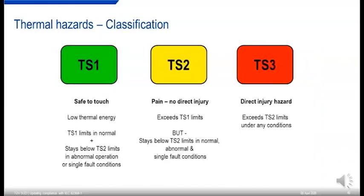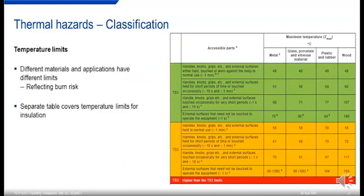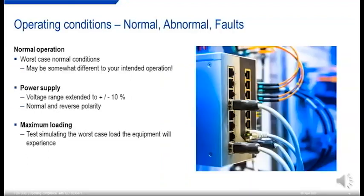For thermal hazards, TAS1, 2, and 3. TAS1 is safe to touch, staying below the limits in normal conditions and below TAS2 limits in abnormal and single fault conditions — slightly different to the preceding classifications. TAS2 might cause pain but no direct injury, staying below TAS2 limits in all conditions. TAS3 is a direct injury hazard exceeding TAS3 limits under any conditions. Different materials and applications have different temperature limits reflecting the burn risk. There's a separate table covering temperature limits for insulation, including electrical insulation systems.